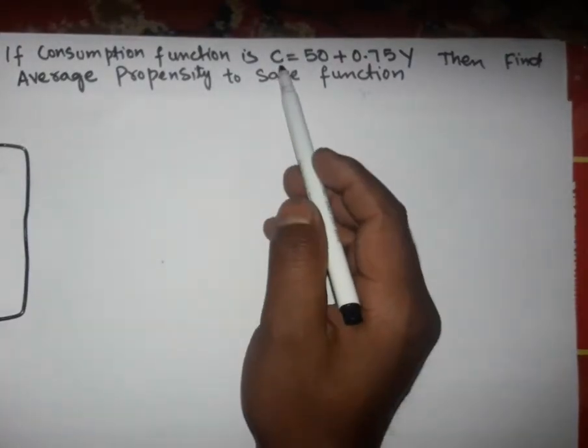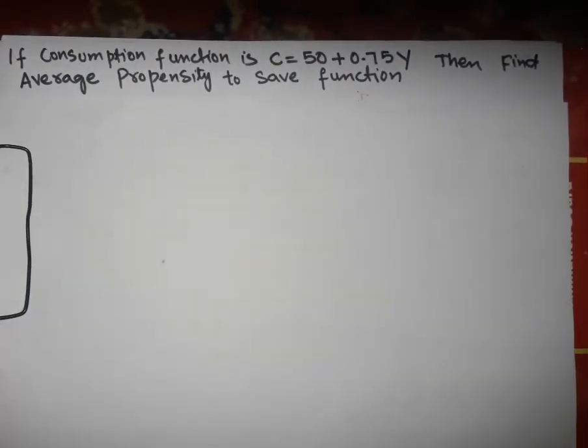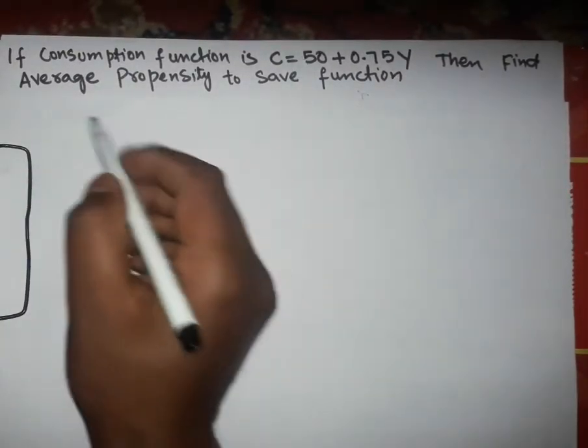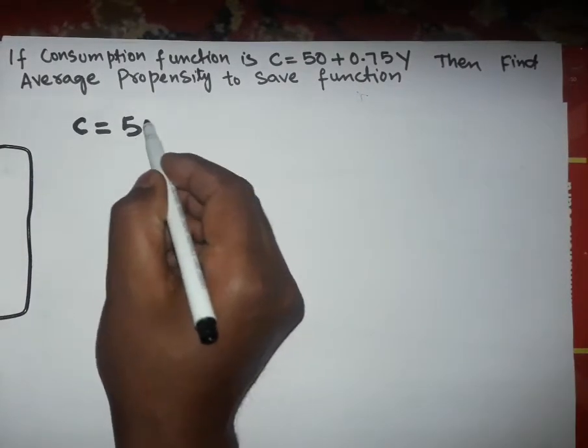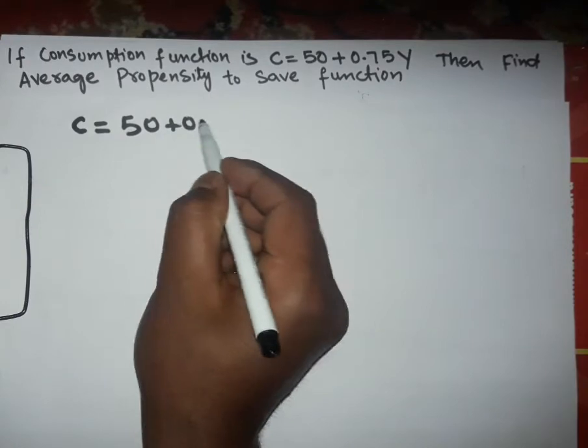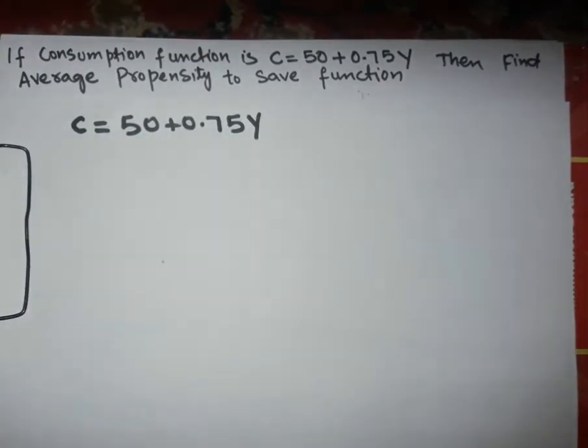So here, this is the consumption function. How will we solve this? Let us see. We will write the given consumption function: C equals 50 plus 0.75Y. This is the given consumption function.